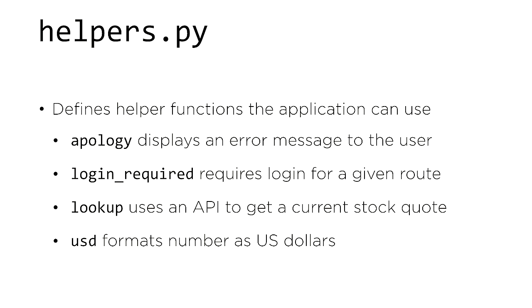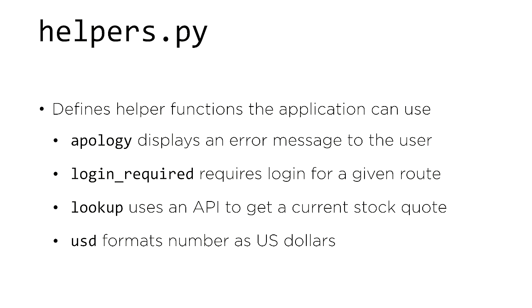In addition to app.py, we provide helpers.py, a Python file containing useful functions for building this web application. The apology function displays an error message to the user. login_required can be placed above any function to require that a user log in before accessing a given route — for example, before buying or selling stocks. The lookup function uses a stocks API to get the current stock quote for a particular symbol. Finally, the USD function takes a number and formats it as US dollars with a dollar sign, dollars, and cents.